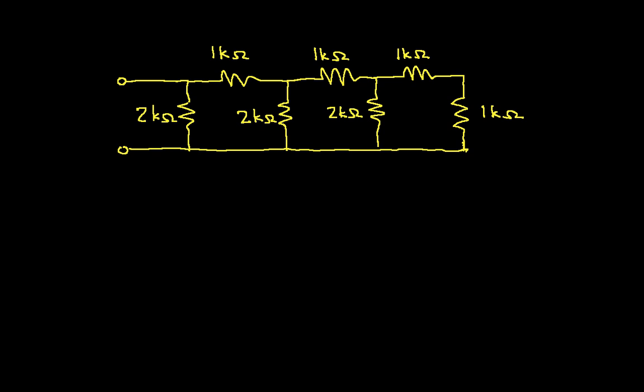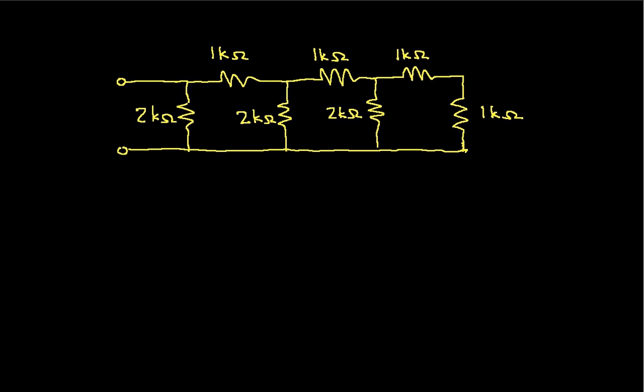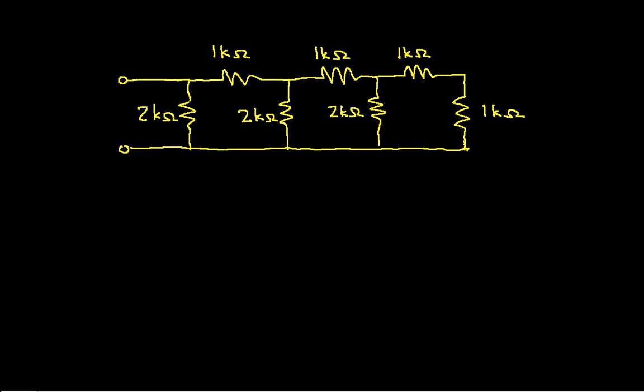So the first example that we'll do is the one that's on the screen now. This is what's called a ladder network and actually has quite a bit of use. It turns out that you can use a ladder network to take a given voltage and from that get voltage references that you need for an analog-to-digital converter and some analog-to-digital converters are built this way.